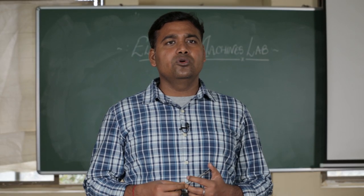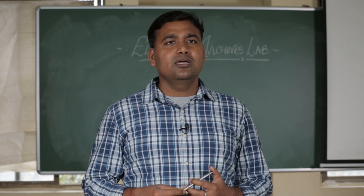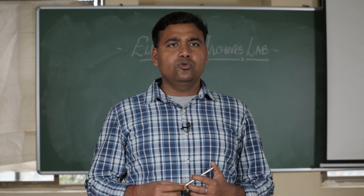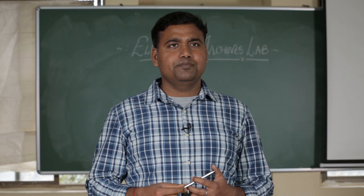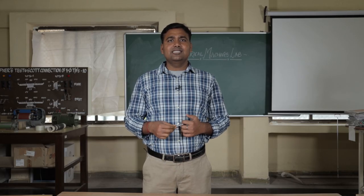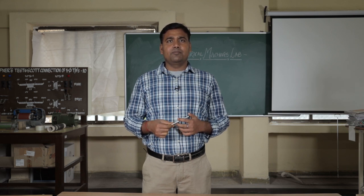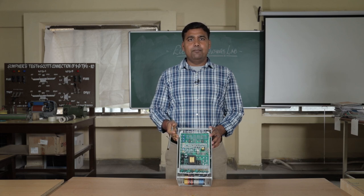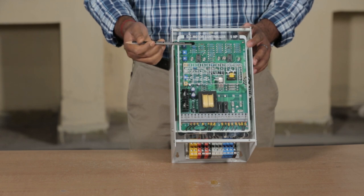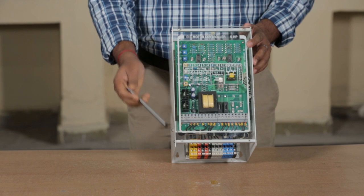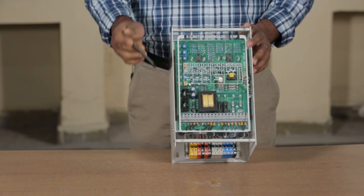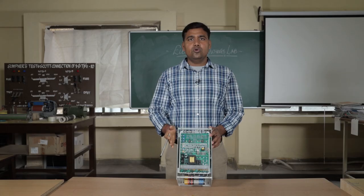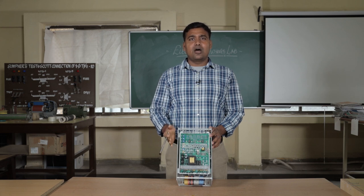First, we will show you the supply. The supply can be AC supply or DC supply. In AC supply, we use three-phase or single-phase supply. Let us look first at the AC supply and then we will explain the DC supply. This is a thyristor which is used to obtain the DC supply. The three-phase AC supply of 415V 50Hz is converted to 220V DC using this thyristor device.